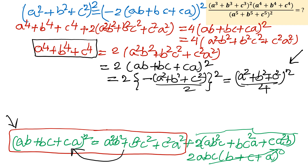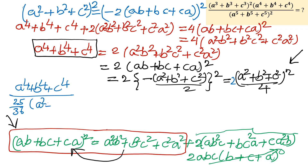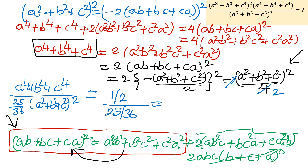Now we have to find out the value of A to the power 4 plus B to the power 4 plus C to the power 4, over 25 over 36, times A squared plus B squared plus C squared, whole square. I will write the denominator as A squared plus B squared plus C squared, whole square. Putting the value, you can cancel the 2 and the 4 in the denominator, so it is A squared plus B squared plus C squared, whole square, over 2. This ratio equals 1 over 25 over 36. Now I can cancel 2 and 36, so it will become 25 over 18. Taking the reciprocal of the denominator fraction gives 18 over 25 as our final answer.